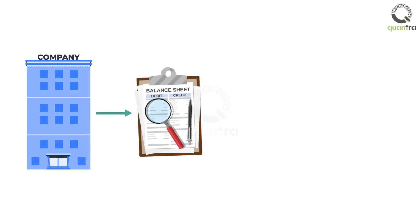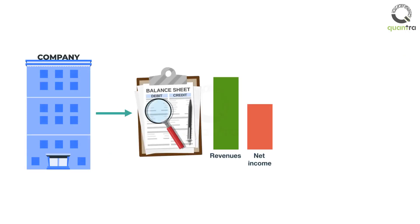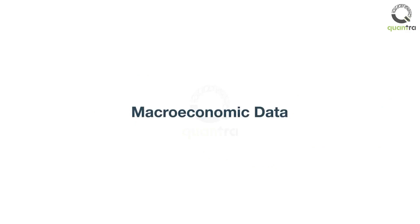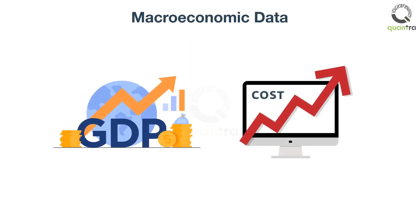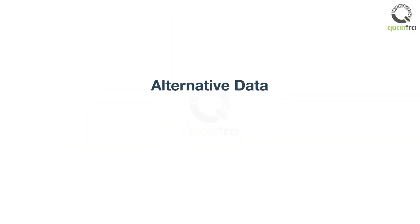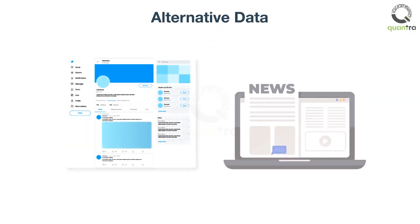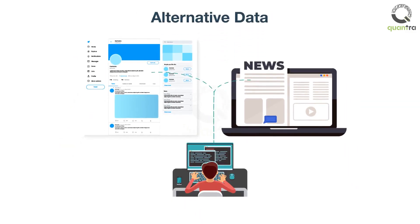You can also use company-specific data such as balance sheet, profit and loss figures, and other financial ratios. Moving further, you can also take into account macroeconomic data such as GDP and inflation rates. Recently, alternative data such as tweets and news have also been used by quants to create trading strategies.